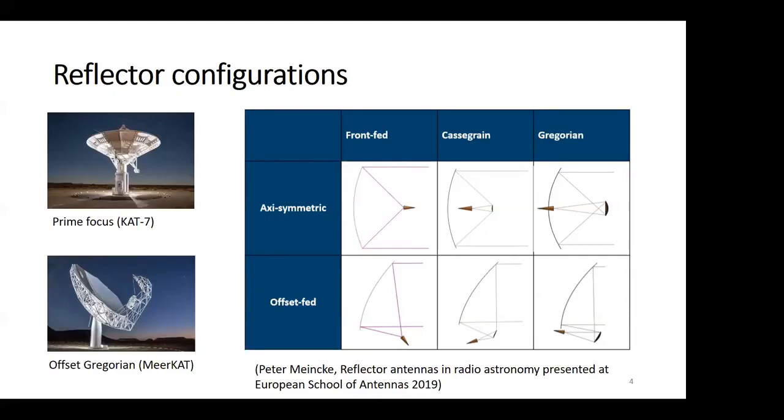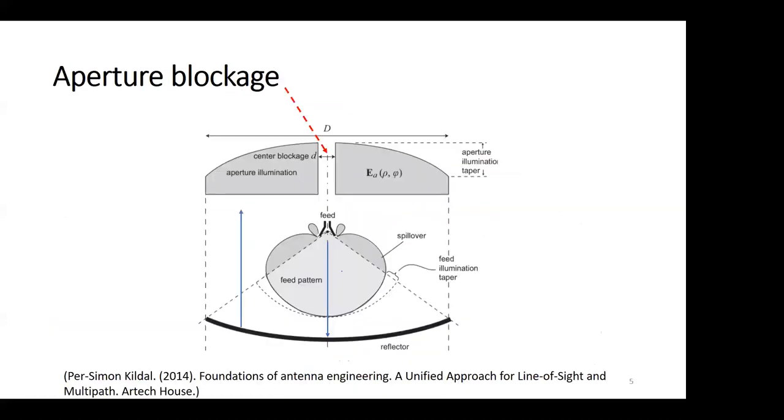What are the inherited advantages of doing a dual reflector design? First off, when you have this prime reflector, you'll have the feed here which will cause aperture blockage. You will also have standing waves because some of the waves will reflect between the feed and the reflector, and this will cause higher side lobes.